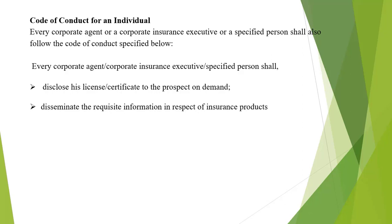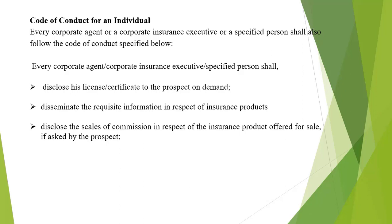The agent should disseminate the requisite information to the insured about the insurance product — all information about the product you are selling must be given to the prospect. The agent shall disclose the scale of commission in respect of the products he is offering for sale. If the prospect asks about the commission or remuneration you are going to receive after selling that insurance product, it is the duty of the agent to disclose that information to the prospect.